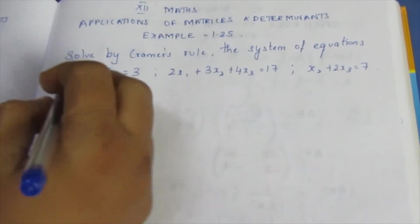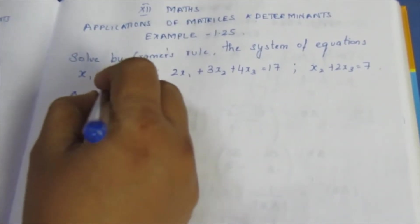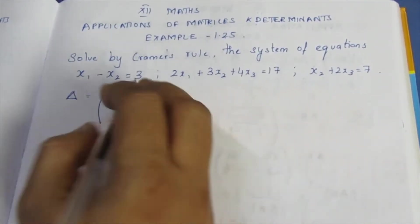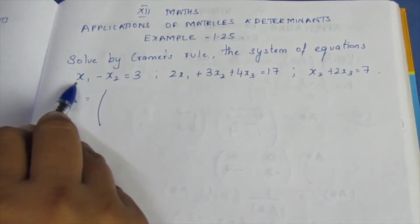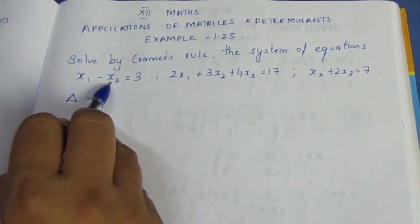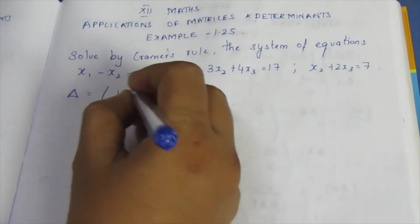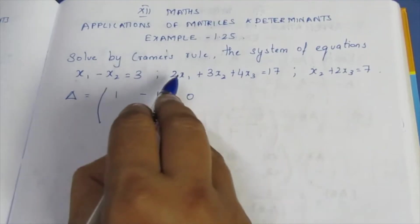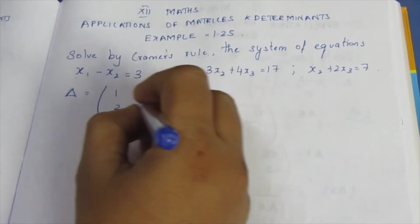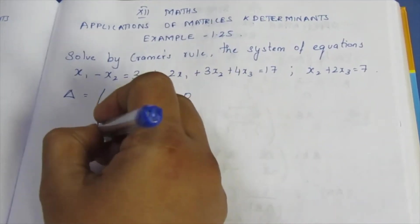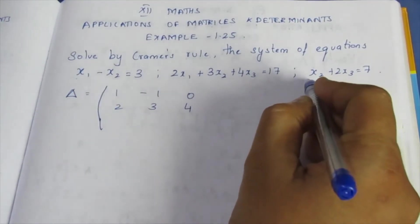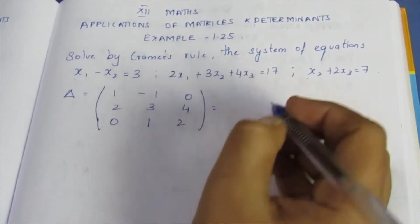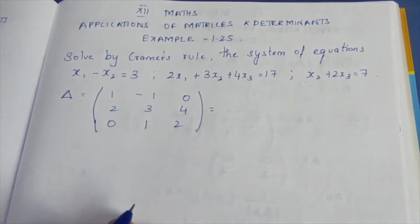Using Cramer's rule, we need to find the determinants. Let's look at the coefficients here. For x1 the coefficient is 1, for x2 it is minus 1. x3 coefficient is 0. Second row: 2, 3, 4. Third row coefficients: 1 is 0, 1, 2. So this is the determinant value we will find.